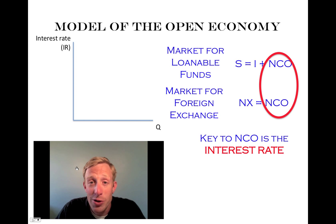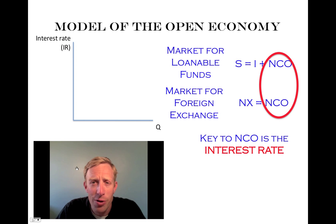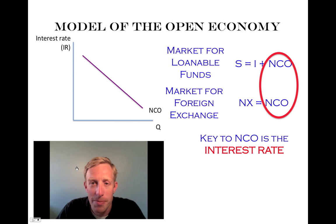The interest rate is inversely related to the amount of net capital outflow. At higher interest rates, net capital outflow falls, meaning foreigners are buying more domestic assets. When we draw this curve out, it looks an awful lot like a demand curve — there's an inverse relationship between price and the amounts that people want. That's our bridge.